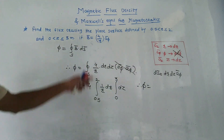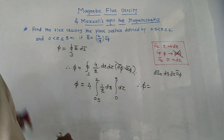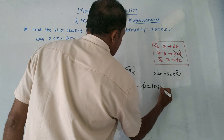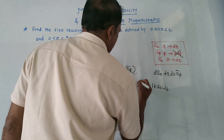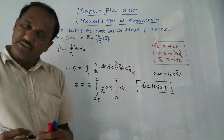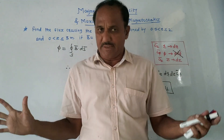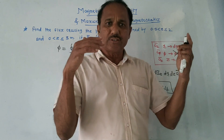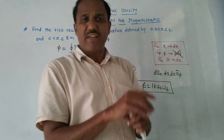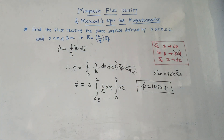Solving this integration, the answer is Φ equals 16.64 webers. This is the value of flux passing through the given portion of the surface. That's it for today's session and for unit number two. Thank you for watching this series.